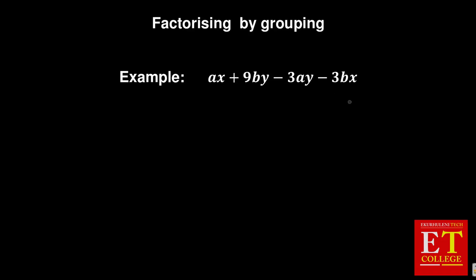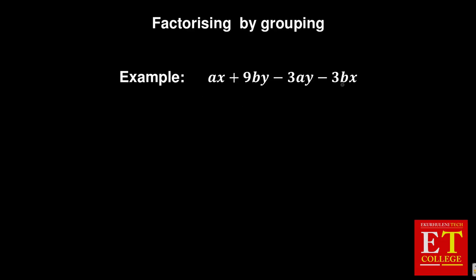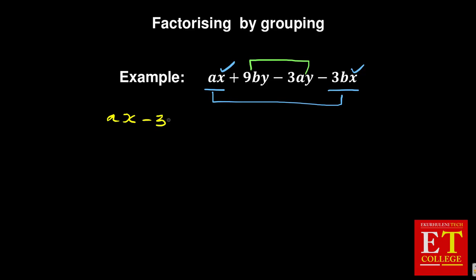I'm going to work a bit faster using the same concept. In this case, there is nothing common in the first two terms and nothing common in the second two, except the second group has a 3 and a 9 — but the main part to focus on is the variables: AX, BY, AY, and BX. I'll choose to group the X terms together, so rearranging gives: AX minus 3PX plus 9PY minus 3AY.